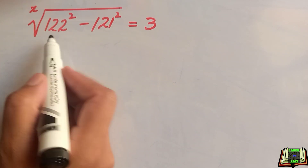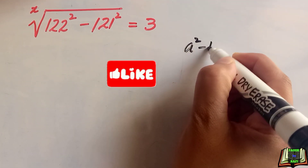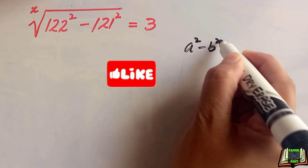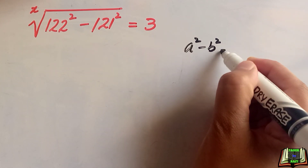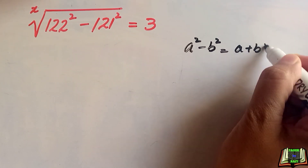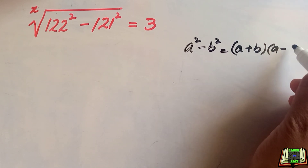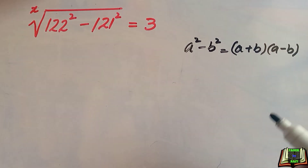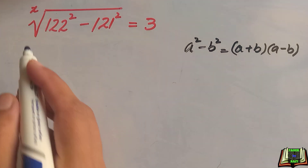This expression 122 squared minus 121 squared is in the form of a squared minus b squared, which is an identity equal to (a + b)(a − b). So we are going to write 122 squared minus 121 squared in that form.